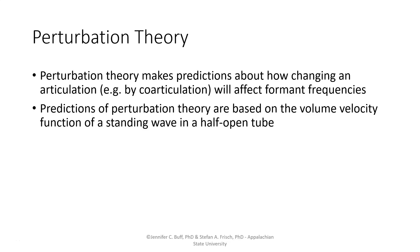Perturbation theory is another theory of the acoustics of speech production. It makes predictions about how changing an articulation, for example by co-articulation, would affect formant frequencies. The predictions are based on the volume velocity function of the standing wave in a half-open tube. It starts with the same type of model as other tube models — the half-open tube closed at the larynx and open at the lips — but then looks at how a standing wave in that tube would be affected by changing its shape.